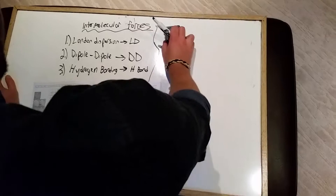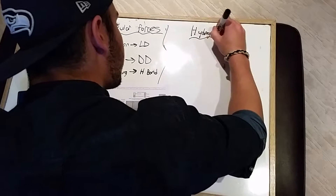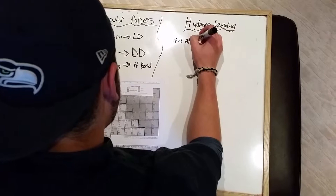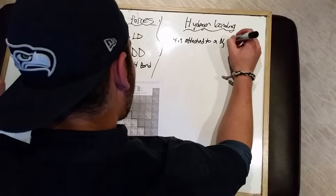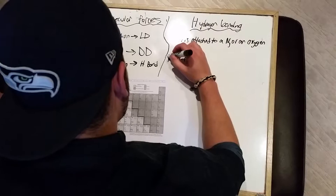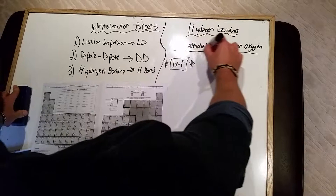Which brings us to our final type, called hydrogen bonding. Hydrogen bonding only occurs when a hydrogen atom is attached to a nitrogen or an oxygen. The only exception to this rule is that it can also be attached to fluorine, but only in the compound HF specifically. If it's anything else with fluorine, such as HF2, it won't happen — it has to be solely HF.